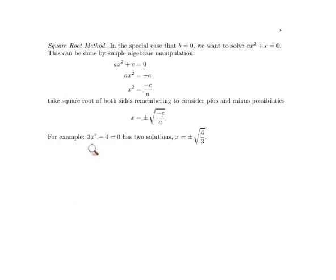For example, 3x squared minus 4 equals zero has two solutions. If you add 4 to both sides and divide both sides by 3, then you've got a positive 4 thirds, and you get plus or minus the square root of positive 4 thirds as the two answers.